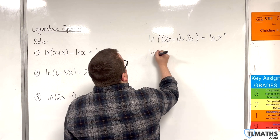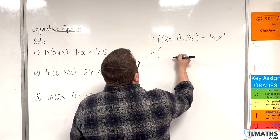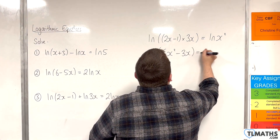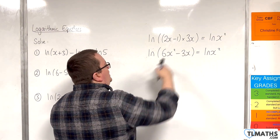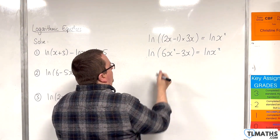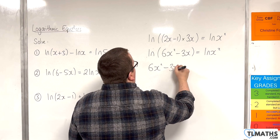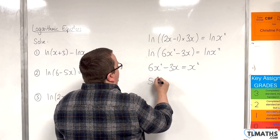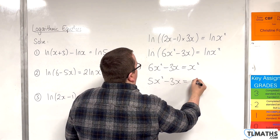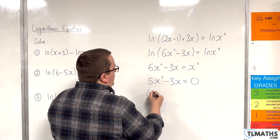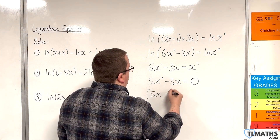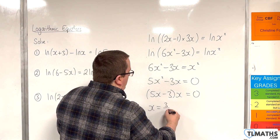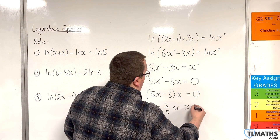Multiplying out the bracket on the left-hand side gives 6x squared take away 3x. Raising e to the power of both sides to get rid of the logs gives 6x squared take away 3x is equal to x squared. Subtracting x squared from both sides and factorising gives x times 5x take away 3 equals 0, so either x equals 3 fifths or x equals 0.